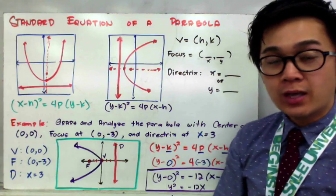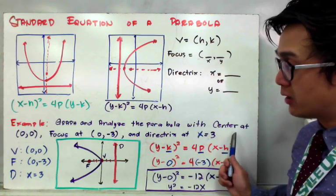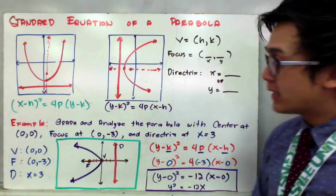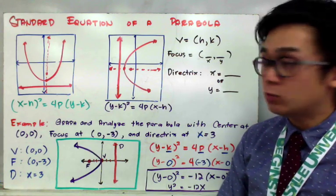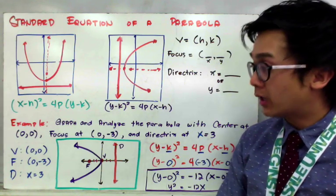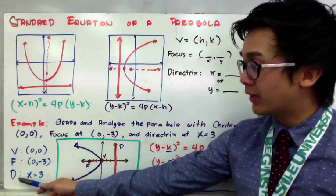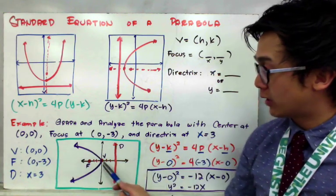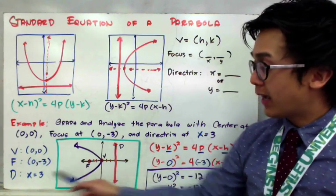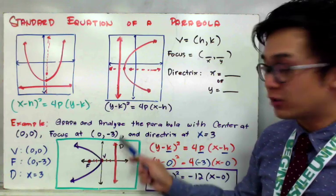In our first example, we need to graph and analyze the parabola with the given center at (0, 0), focus at (0, −3), and directrix at x = 3. It's very important to use graphing paper when working with conic sections. We have three parts: vertex, focus, and directrix. The vertex is at (0, 0) at the center, the focus is at (0, −3), and the directrix is the vertical line x = 3.